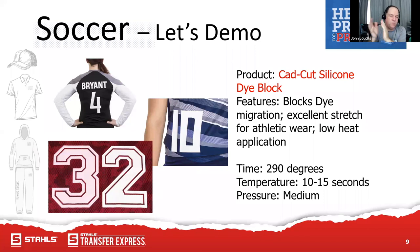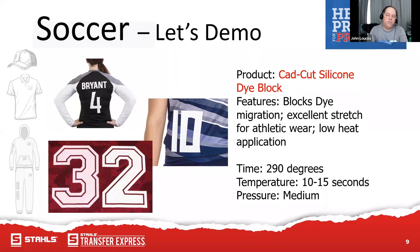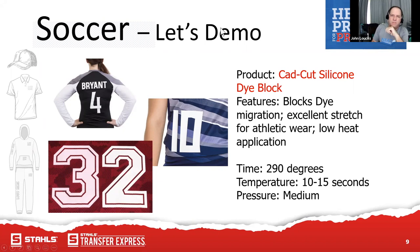Facts about Silicone Dye Block: it blocks dye migration, has excellent stretch for athletic wear, and is a low-heat application so we're not scorching the garments. A lot of people get that large square scorch mark — we need to watch temperature and pressure. Now let's switch cameras and put some Silicone Dye Block on the soccer jersey.